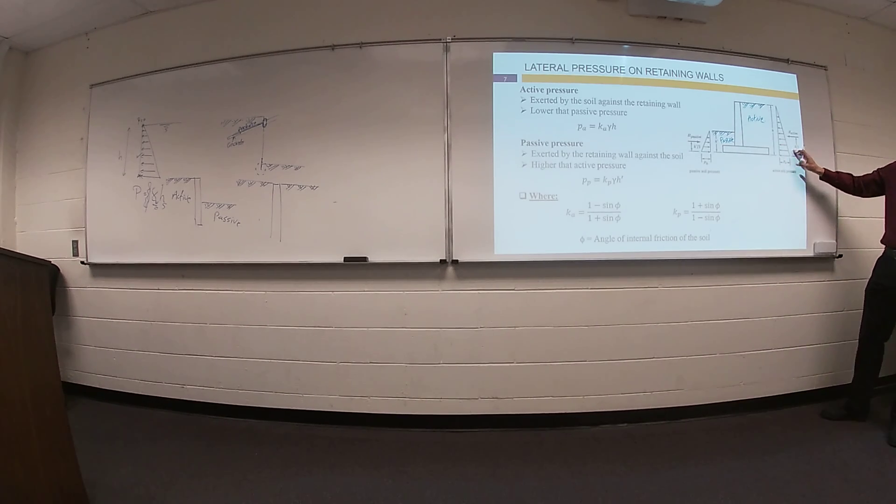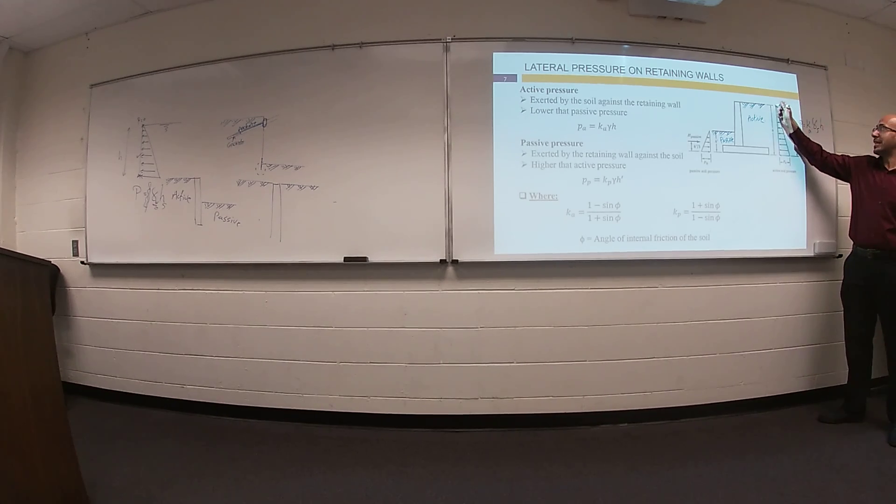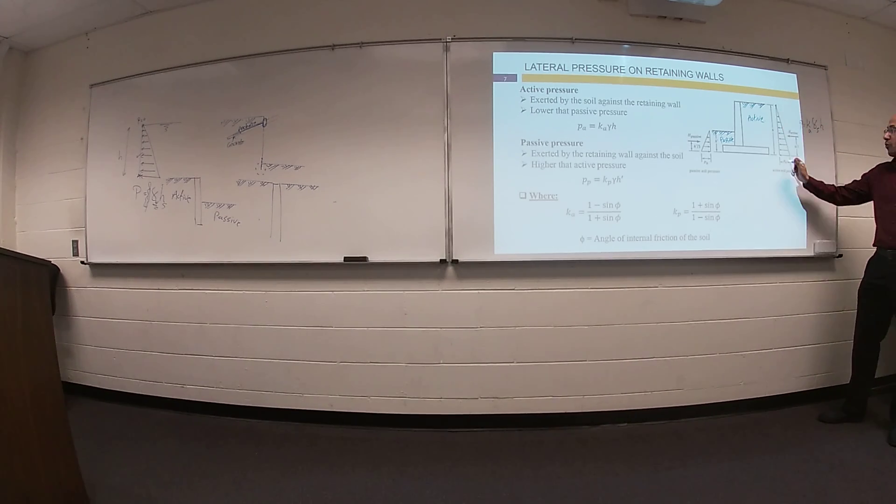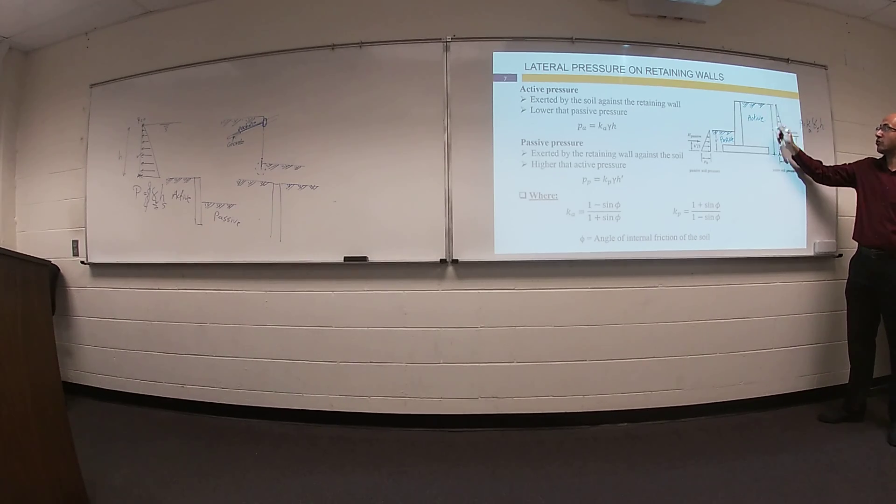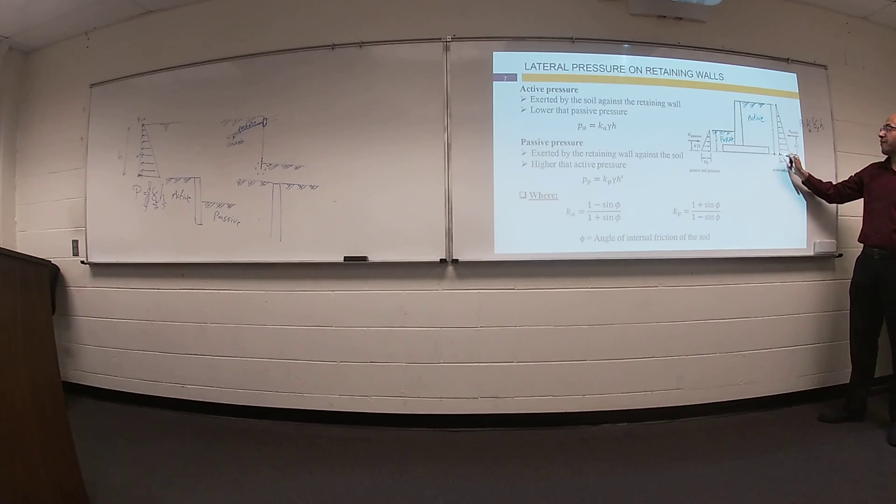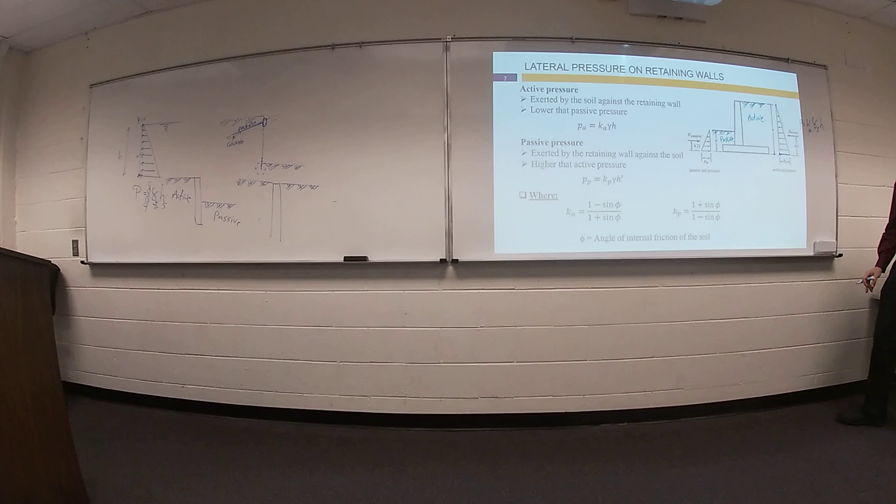So on this side, your pressure will be something called K active times gamma soil times H. We don't have H here, your pressure is zero. We have H here, this total distance from this point to the ground surface, so we have value. If you connect between the two values, you can get this triangle pressure.